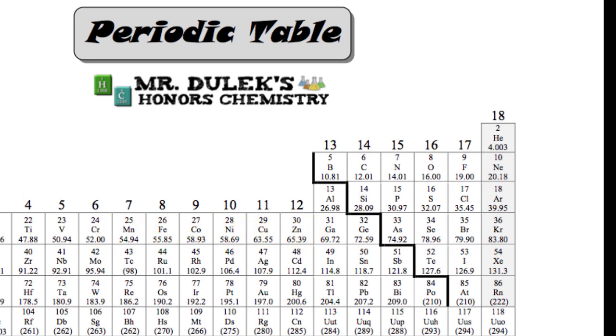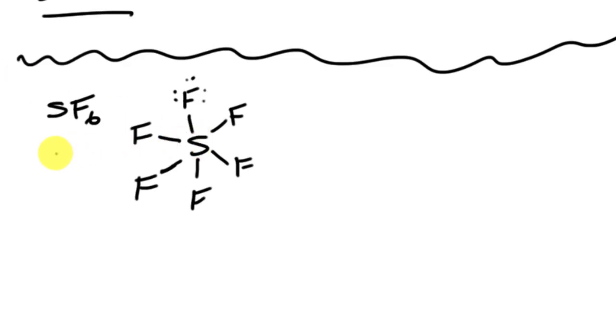So this expanded octet, this octet that goes beyond the eight, and our eight is not for everything, right? We see it's not for everything. So when we get to expanded octets, we can definitely go beyond, only if it's in the third energy level or beyond. So it has to be third energy level. Why? Because the d orbital is available.